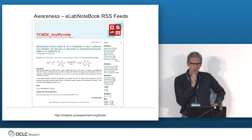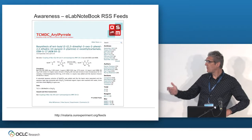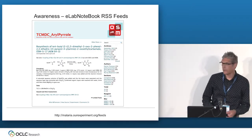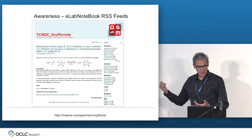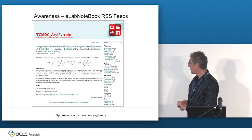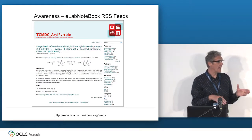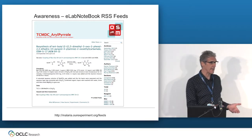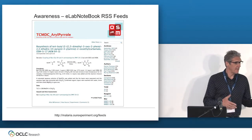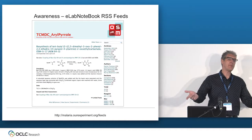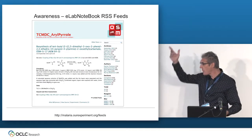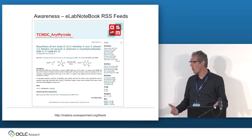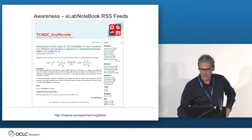A very interesting example: online lab notebooks. There's the Open Malaria project where, as researchers set up an experiment, this information becomes available online. And more than that, as they start a new experiment or get new findings, you can actually be alerted — you'll know when they discover something new or are up to something new, even without going to their site. This is literally with an alerting mechanism.